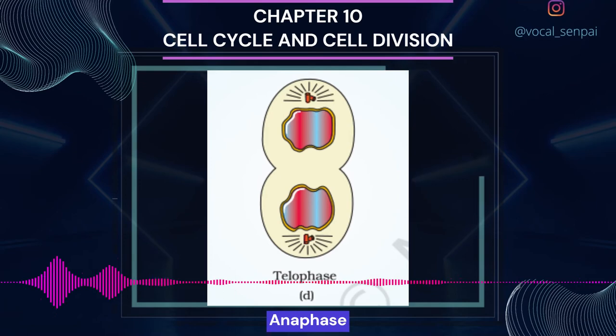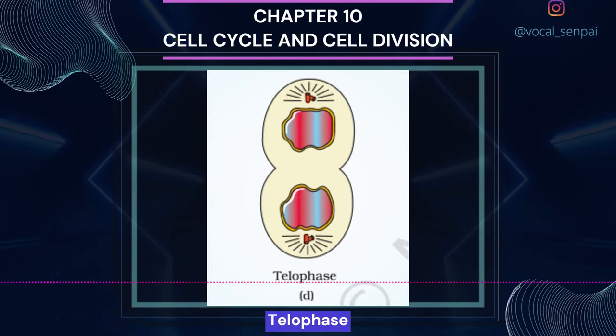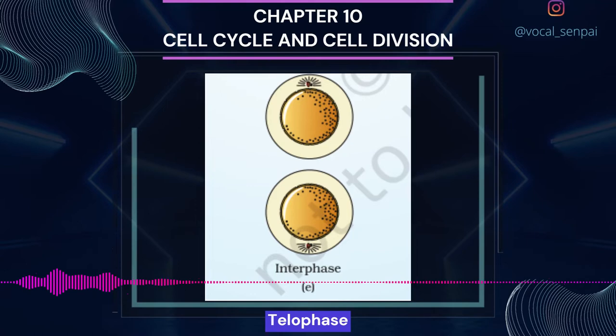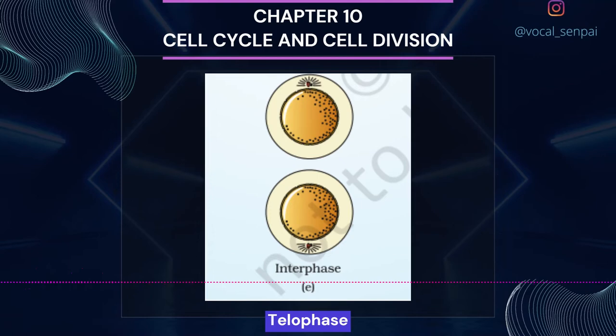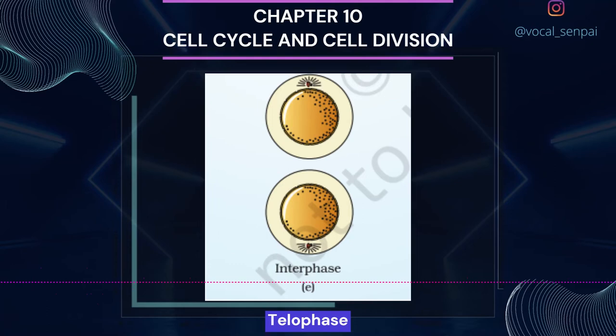At the beginning of telophase, the final stage of karyokinesis, the chromosomes that have reached their respective poles decondense and lose their individuality. The individual chromosomes can no longer be seen and each set of chromatin material collects at each of the two poles. Key events of telophase include: chromosomes clustering at opposite spindle poles and their identity being lost as discrete elements; nuclear envelope developing around the chromosome clusters at each pole, forming two daughter nuclei; and nucleolus, Golgi complex, and ER reforming.